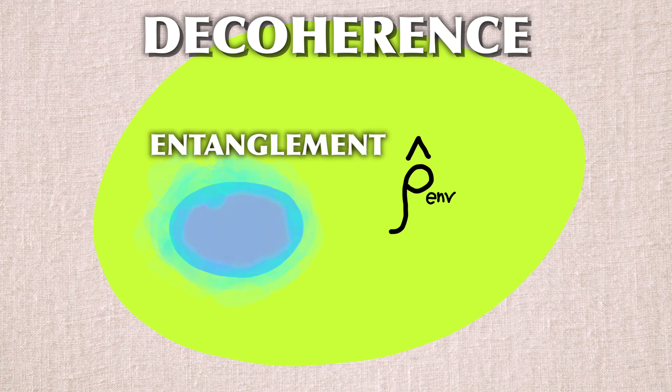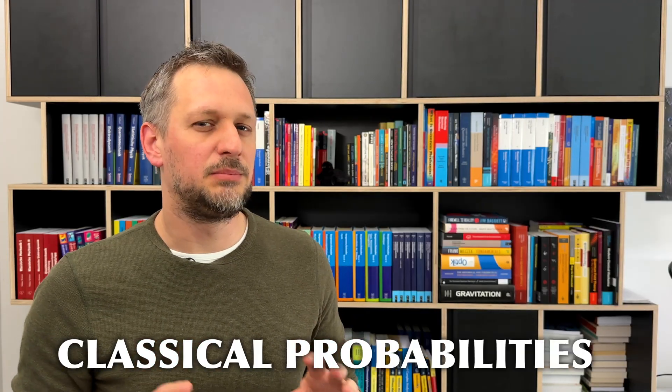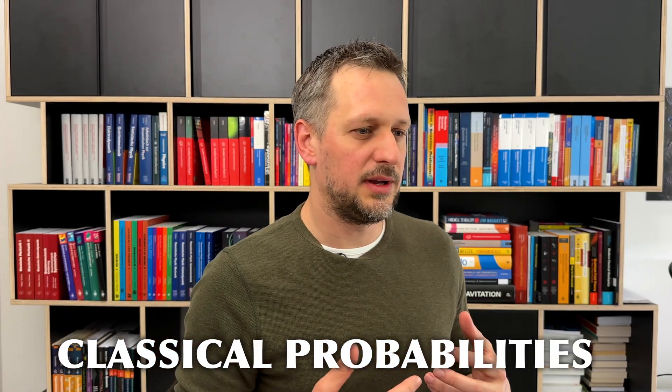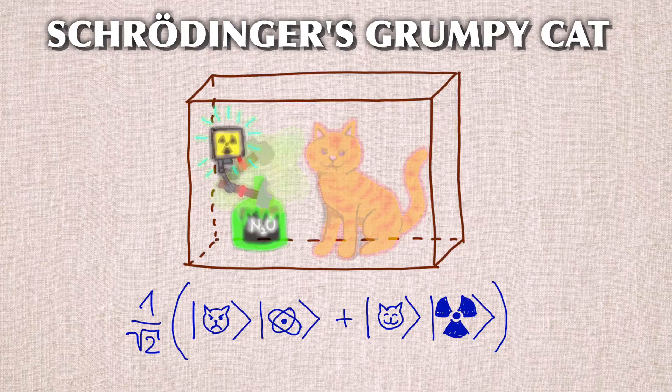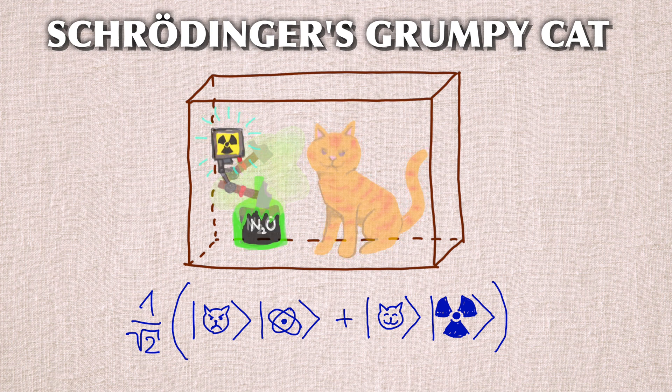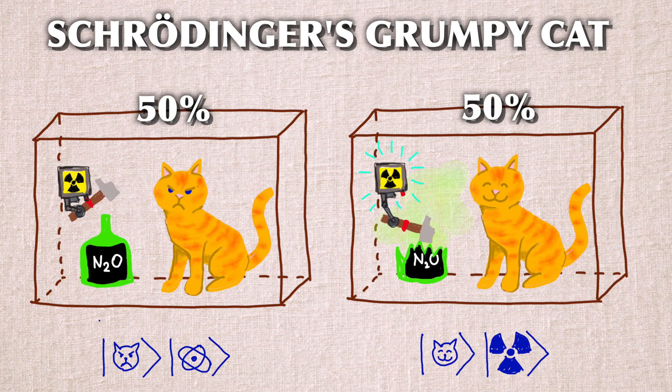Entanglement with the environment and information loss that leads to a mixed state. Mixed states do not contain any quantum superpositions anymore, just classical probabilities to reflect our ignorance of what the state is. This means that the cat is never in a quantum superposition. It immediately takes on a classical state with a classical 50-50 probability, because we don't know which one. This means it immediately takes on the state of either grumpy or happy, even before opening the box. And opening the box doesn't change anything about the state.